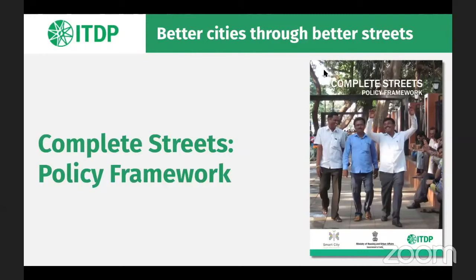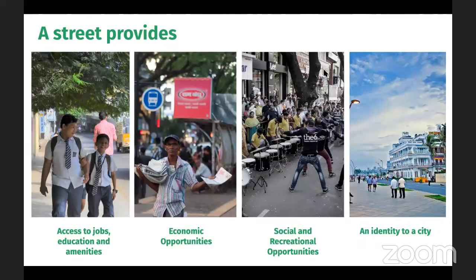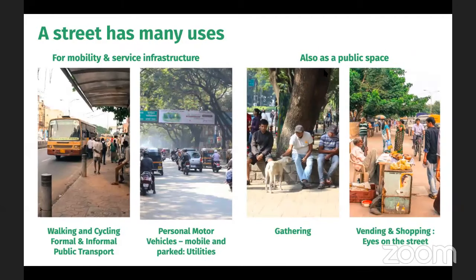Let's take a look at the policy framework document, which is targeted at decision makers. Any stakeholder interested in convincing decision makers can use this document. It starts with what exactly is the function of a street. A street is not just a conduit for vehicles to move from one location to another — it provides access to jobs, education, and amenities. It provides economic opportunities, social and recreational opportunities, and in the case of multiple streets such as the promenade from Pondicherry, Times Square in New York, or the Rambla in Barcelona, it provides identity to a city.